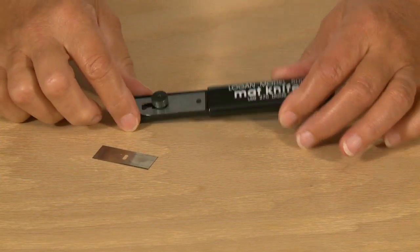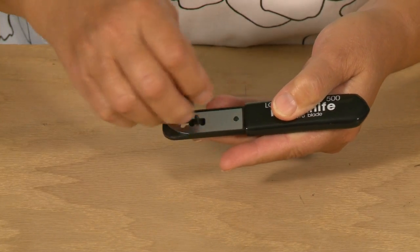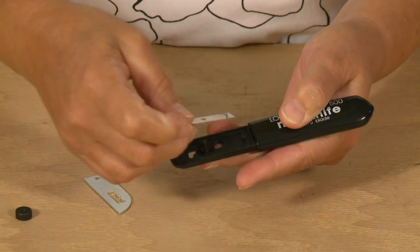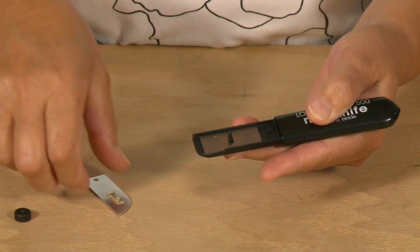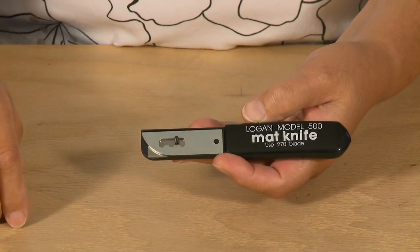To install the blade in the 500 mat knife, first remove the blade knob and the blade cover. Install one Logan 270 blade sharp side down onto the mat knife and replace the blade cover, then replace the blade knob.